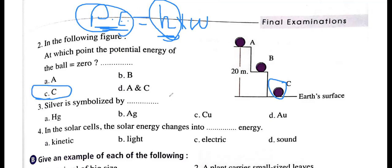Silver is symbolized by Ag. The solar cell: solar energy is changed into electric energy. A solar cell is a device used to change solar energy into electric energy.